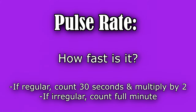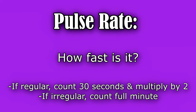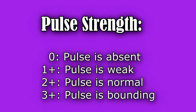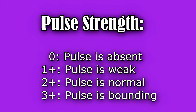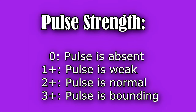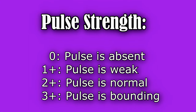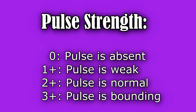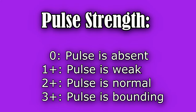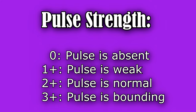Whenever you're assessing the pulse, you will be looking at a few things. One thing will be the rate — how fast is it — along with the strength, and you'll be grading it on a scale of zero to three, with zero being absent, one plus it's weak, two plus it's normal, and three plus it's bounding.